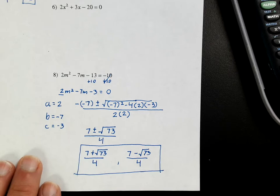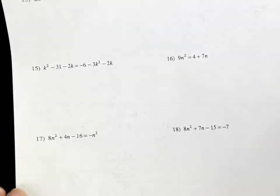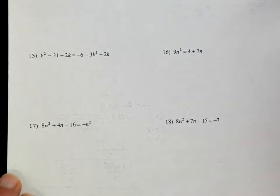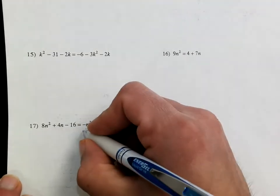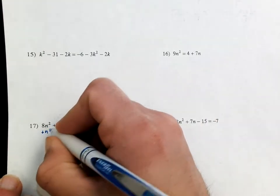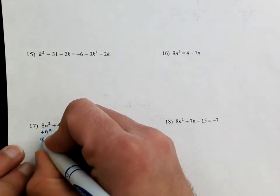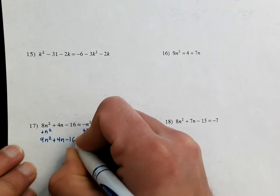Let's do one more — number 17. Now on 17, same idea: you must set this equal to zero. I have to add n squared to both sides. You might want to write a little bit smaller on this one. So this is going to be 9n squared plus 4n minus 16 equals zero.